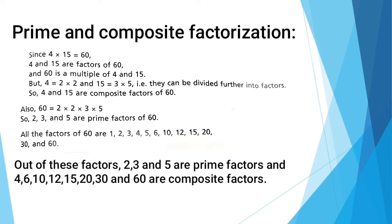Also 60 is equal to 2 multiply by 2 multiply by 3 multiply by 5. So 2, 3 and 5 are prime factors of 60. And all the factors of 60 are 1, 2, 3, 4, 5, 6, 10, 12, 15, 20, 30 and 60.